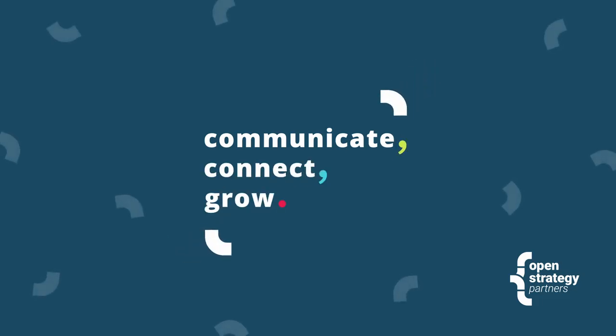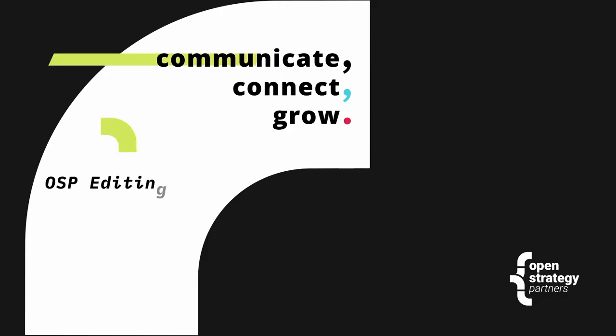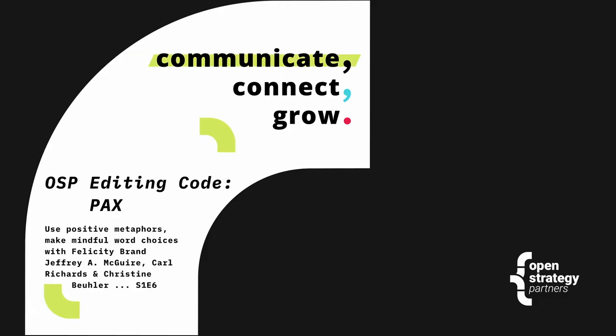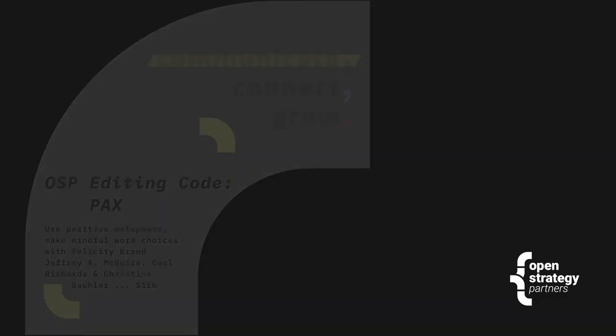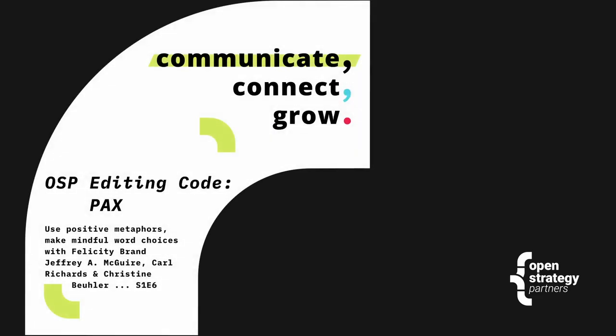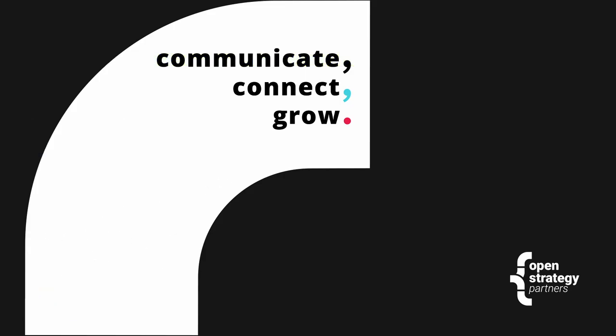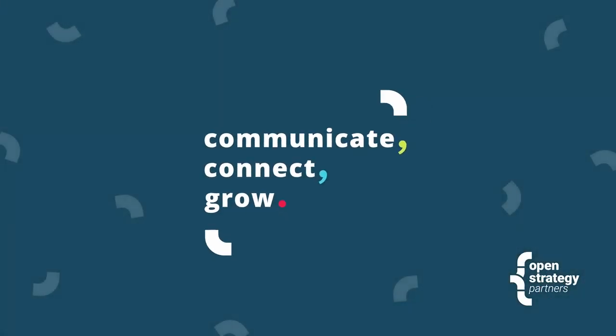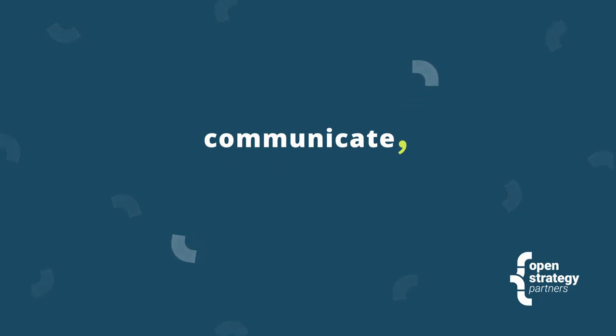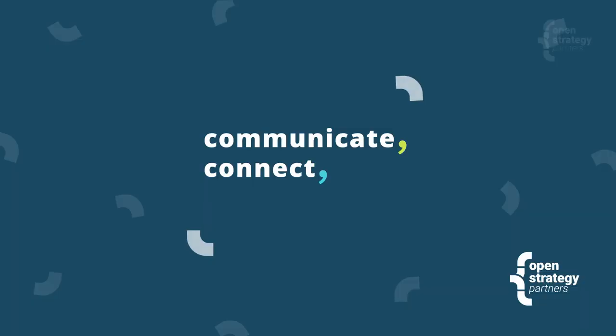The PAX editing code falls into the style and phrasing part of the editing process. It's about word choice and choosing to use inclusive and human-centric language. In our documentation about this code, it says: aim to use non-violent language by replacing metaphors around war, sports, and sex with other more peaceful ones.